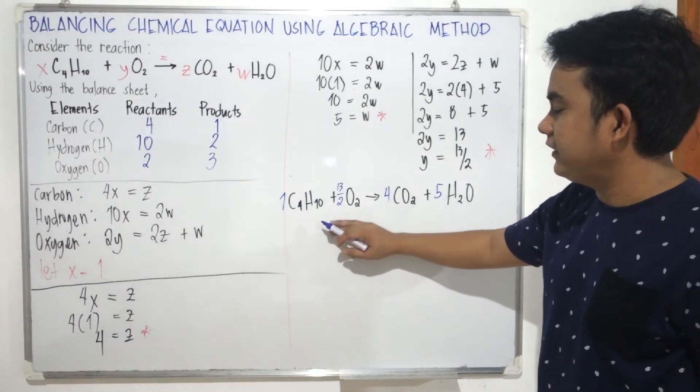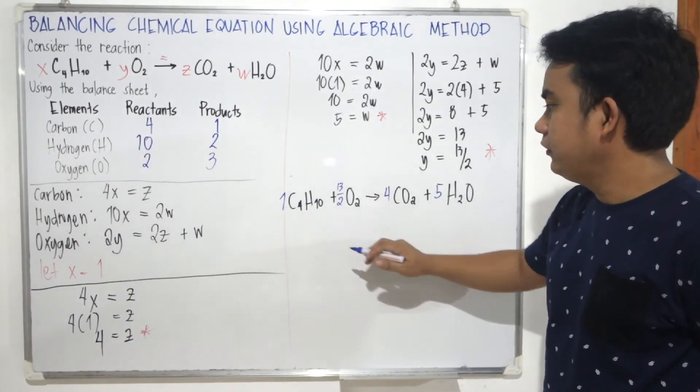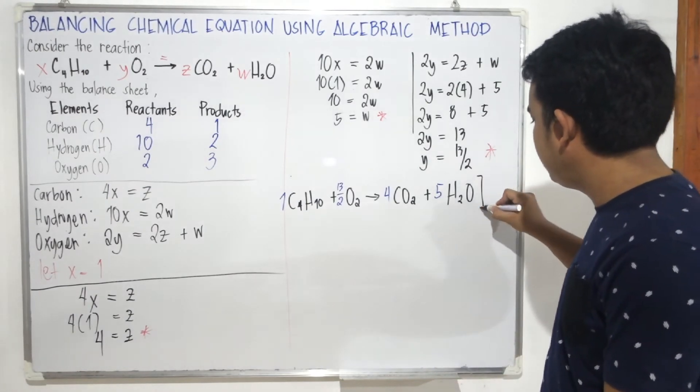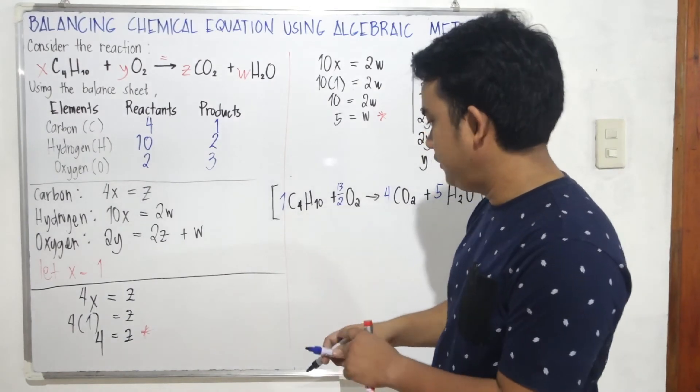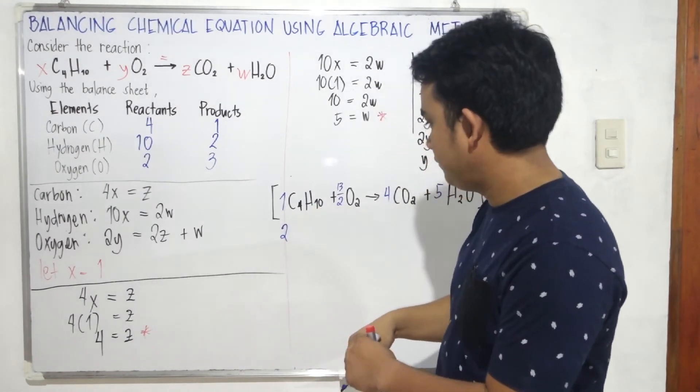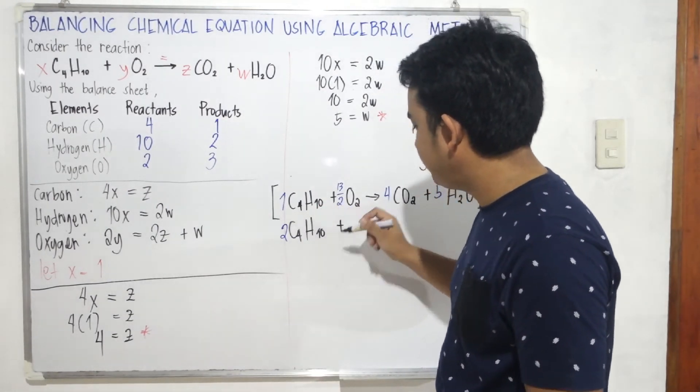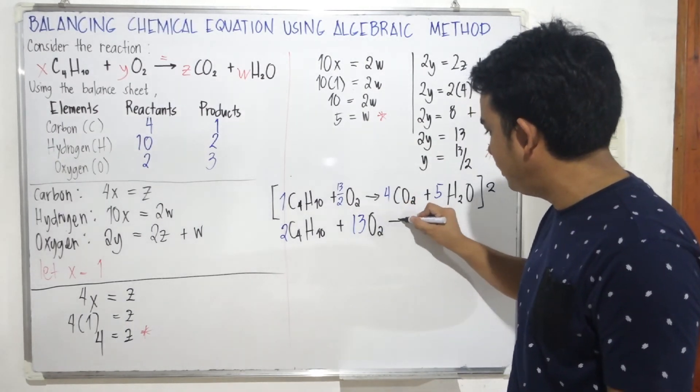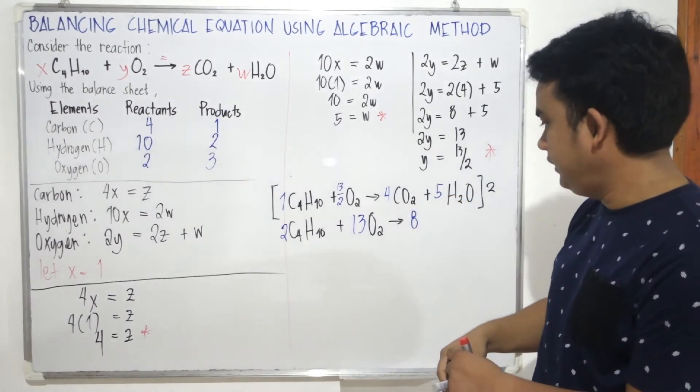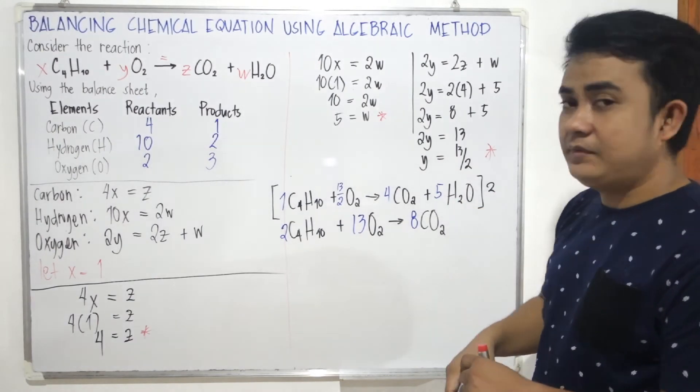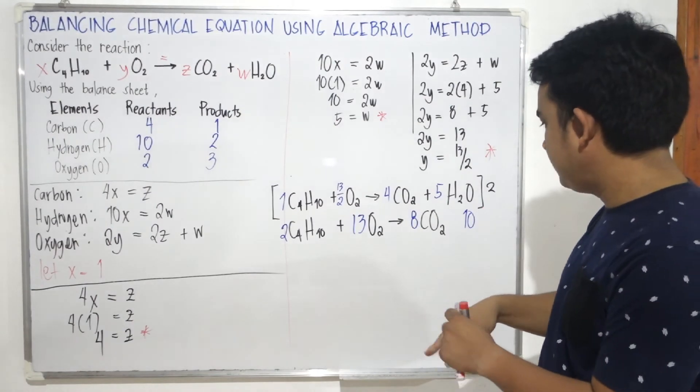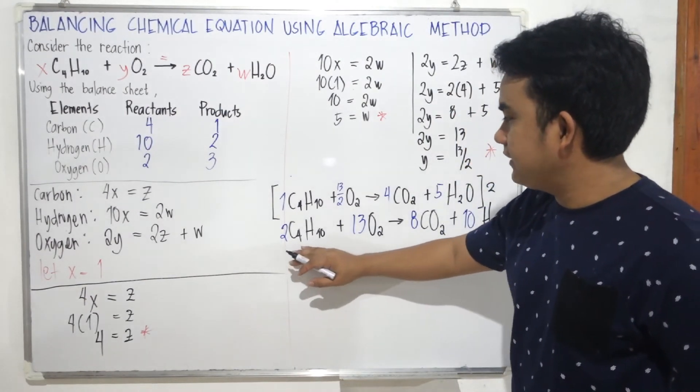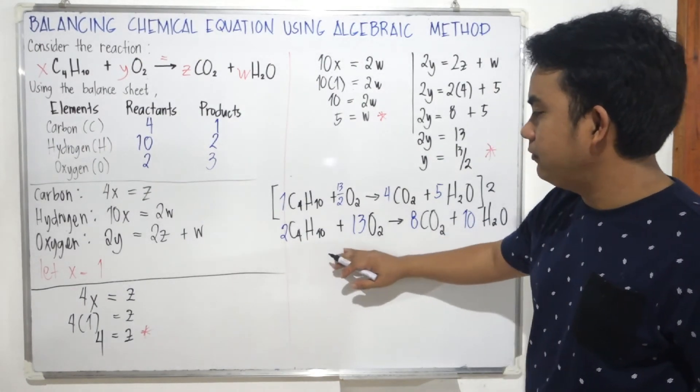when adding coefficients in balancing, we avoid having fractions. So to eliminate the fraction, we multiply all the coefficients by 2. 2 times 1 becomes 2 C4H10 plus 13 over 2 times 2 becomes just 13 O2 will form 2 times 4 is 8 CO2, and 2 times 5 equals 10 H2O. This is the correct balanced equation because we no longer have fractions. And also, as you can see, the coefficients are in lowest form.